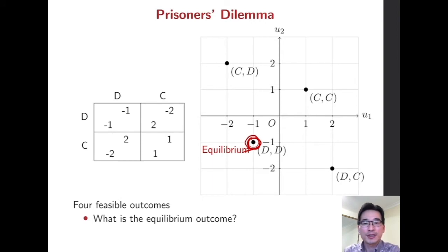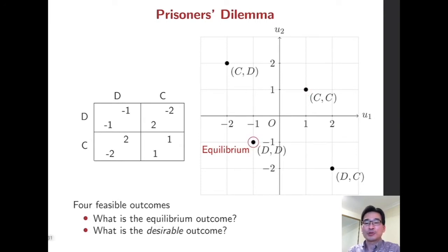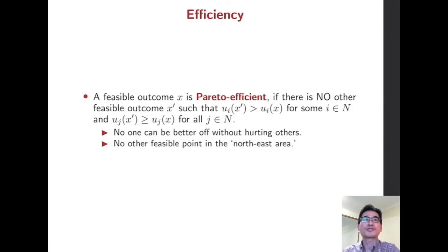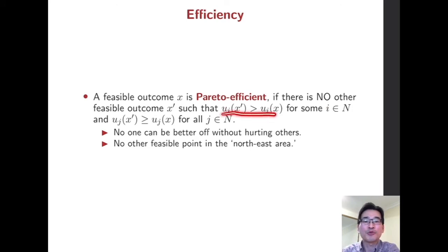Many of you may think that CC, where both players get 1, might be better than the equilibrium point. But we need to be a little more formal. We are going to introduce some properties in an allocation problem, such as efficiency and individual rationality. A feasible outcome is said to be Pareto efficient if there is no other feasible outcome which makes at least one person strictly better off and no one worse off.